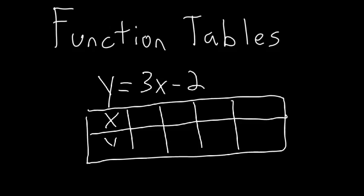Our input is x and our output is y. Then we just pick some numbers — we want both positive and negative — so let's do negative 1, 0, 1, and 2. We're going to input these numbers into our function and see what we get out.